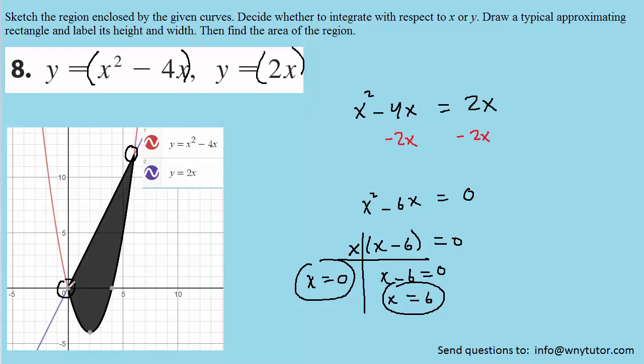And if you look, that can be confirmed just by inspection. We can see right here that they intersect at x equals zero. And then up here they intersect, if we kind of follow it down, indeed at x equals 6.